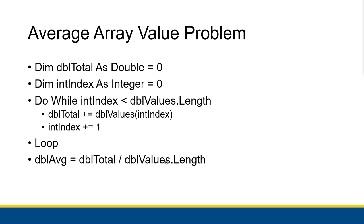I could also use double values dot getUpperBound passing in zero, add one — all that in parentheses because of order of operations. I could also use int index as the divisor because the last check of the condition will be when int index actually equals the length of double values. If there are five items, int index will be five after the last addition, and five is not less than five so it doesn't go through the loop, which means at the calculation of double average, int index is five. I just like using length — it's self-documenting as to what I'm actually using.